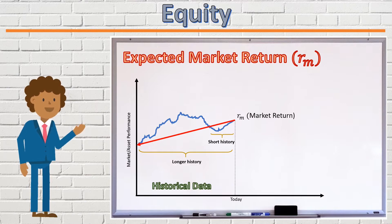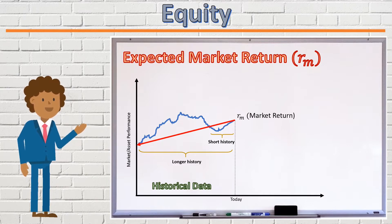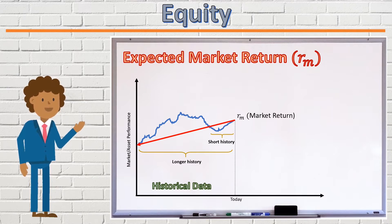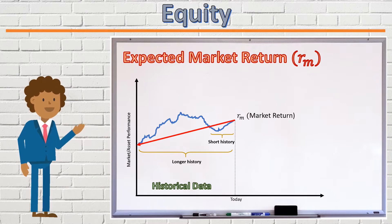However, taking a longer history into account could include outdated and irrelevant information. Therefore, the choice of historical period should take historical events into account, and should exclude any history beyond which the world would be a completely different place to what it is today. So, sound judgment should be applied when determining the historical period to look at when determining the expected market rate of return using this method.